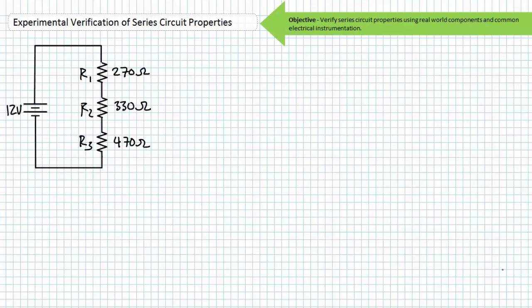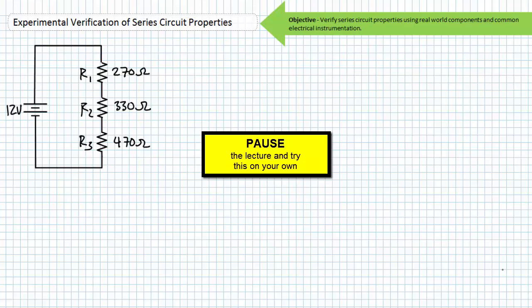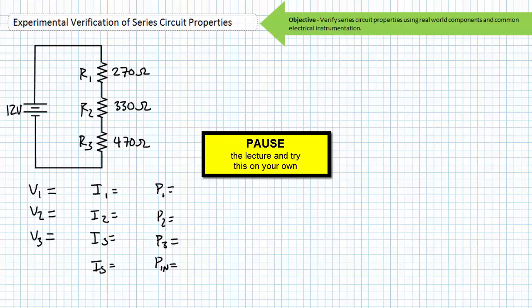Part one uses a series circuit of three resistors supplied by a single 12-volt source. R1 is 270 ohms, R2 is 330 ohms, R3 is 470 ohms. Pause the lecture and solve for the voltage across each component, the current through each component, and the power dissipated by each component. Additionally solve for source current and power supplied by the source. The challenge: you are only authorized to use Ohm's law twice and are not to directly calculate total resistance until the very last step. This ensures you use the available tool set — basic series circuit properties, the voltage divider rule, and Kirchhoff's voltage law.